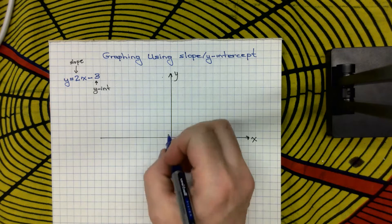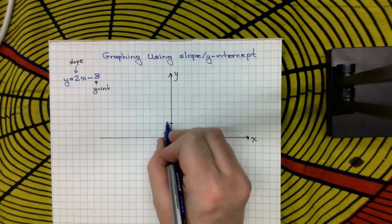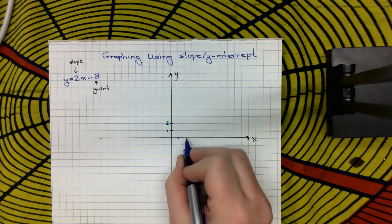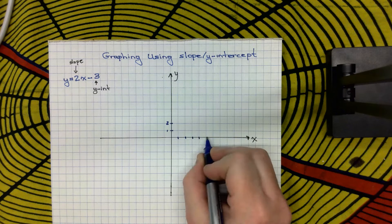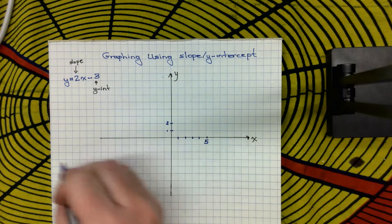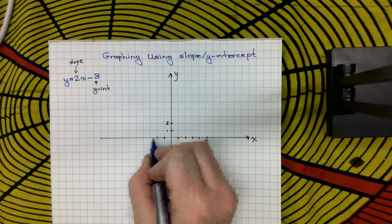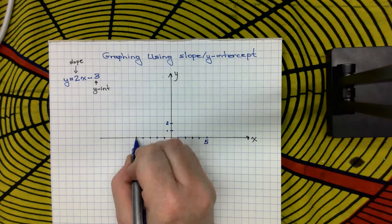So if we assume that all of these are one unit, so 1, 2, and 1, 2, 3, 4, 5, etc., negative 1, negative 2, negative 3, negative 4, and negative 5, makes this a bit easier to graph.